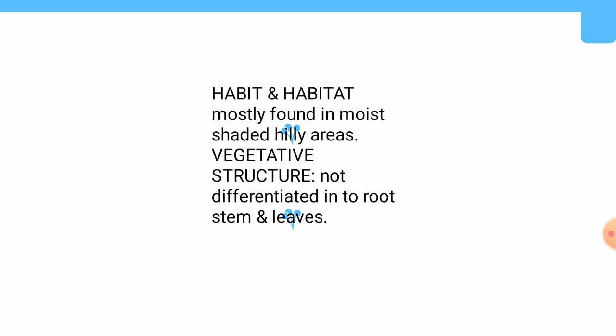Vegetative structure: Bryophytes are more differentiated than algae, but not truly differentiated into roots, leaves, and stems. They have leaf-like, stem-like, and root-like structures. The thallus of the Bryophytes is attached to the substratum by unicellular or multicellular rhizoids, and is still better developed than algae.